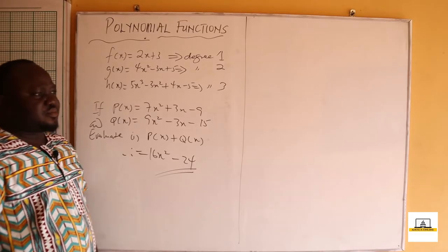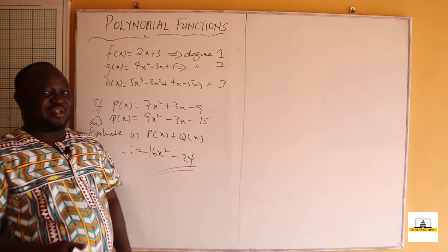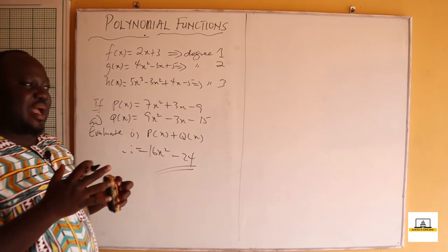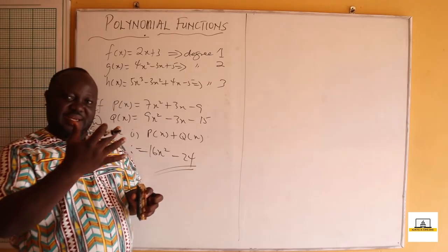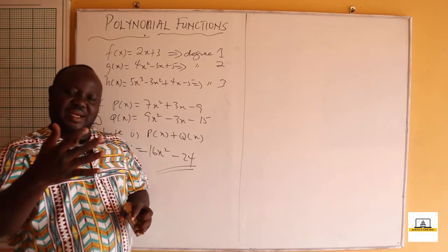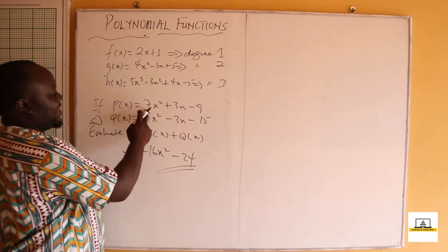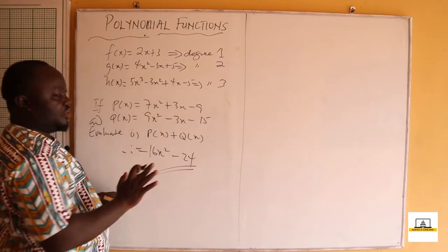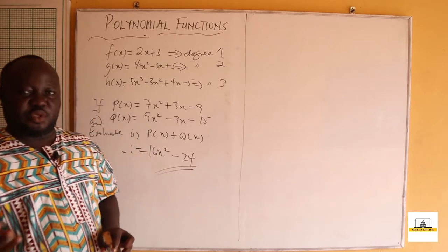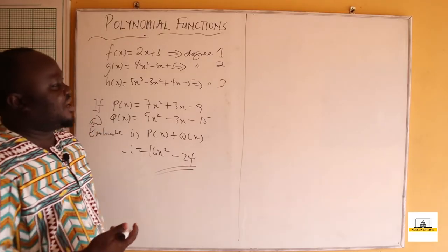Addition and subtraction of polynomials is straightforward — you just add your like terms. x³ adds with x³, x² adds with x², x adds with x, and constants add with constants. Don't add 7x² with -3x — only add corresponding coefficients of the same degree. The same rule applies to subtraction.